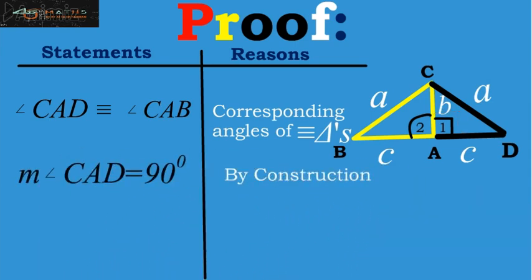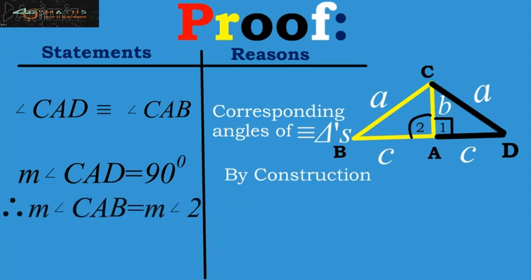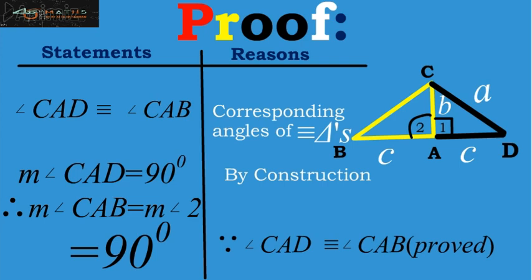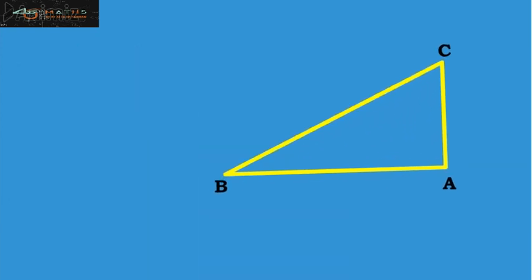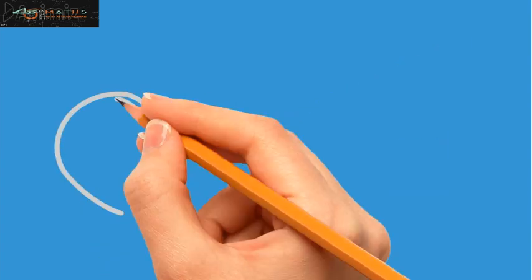Therefore, measurement of angle CAB is also equal to 90 degree as we have proved that angle CAD is congruent to angle CAB. And this justifies that the triangle ABC is a right angle triangle. And this is what we want to prove. Hence, the theorem is proved.